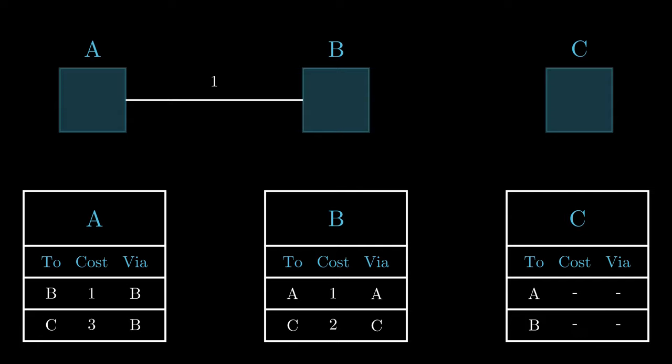Router B can tell that it has lost its direct connection to C. So it looks at the tables from neighboring routers, in this case just router A, and it sees that router A can actually still reach router C. Thus router B thinks that it is able to send packets to C via A.